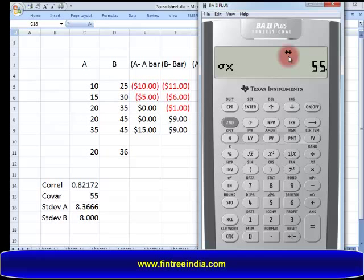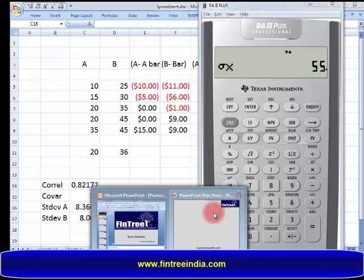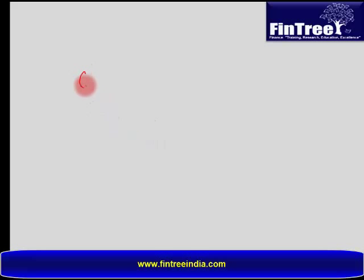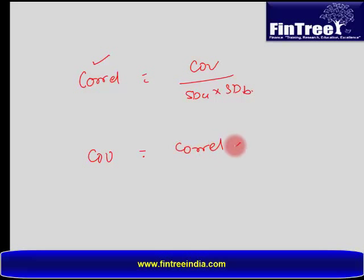By using correlation and two population standard deviations, you can calculate covariance on the exam. The formula for correlation was covariance divided by standard deviation A into standard deviation B. If I have correlation, covariance equals correlation into standard deviation A into standard deviation B. Just multiply all three numbers.